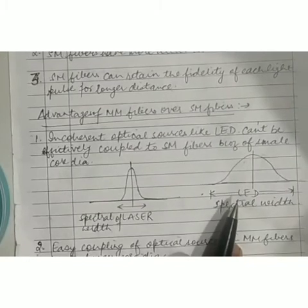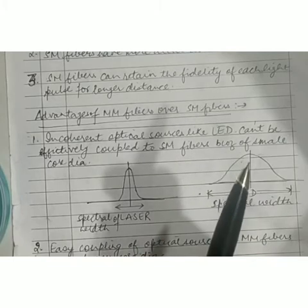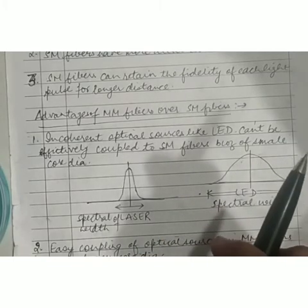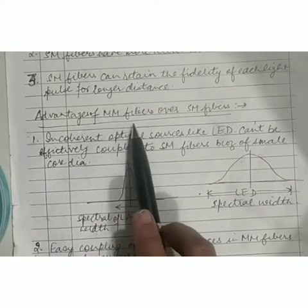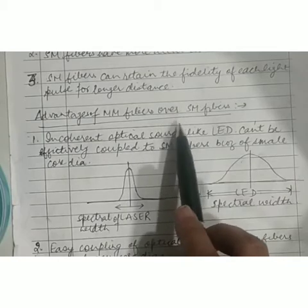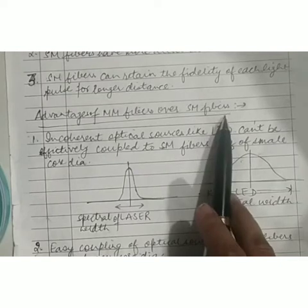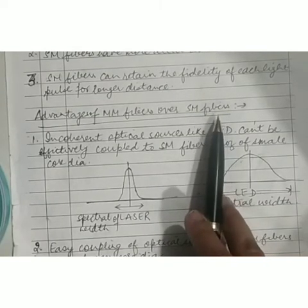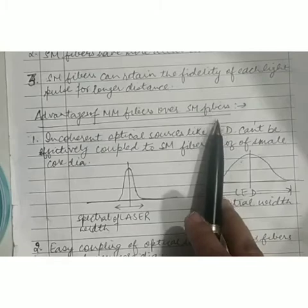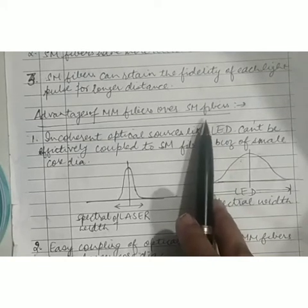There are certain advantages which multimode fibers possess over single mode fiber, and they are directly linked to the large core diameter of multimode fiber. In case of multimode fiber the core diameter can be 50 to 62.5 micrometers, whereas single mode fibers have a very small core diameter of only 8 to 9 micrometers. Because of the smaller diameter of single mode fiber, it becomes very difficult to couple the light source effectively into it.